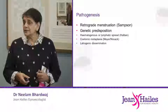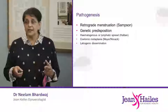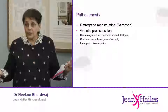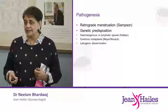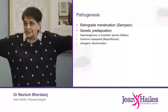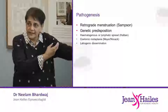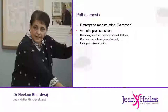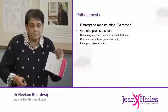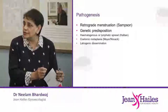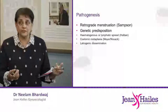So why does it happen? We don't know is the answer, and this is where research is being directed. The most popular theory is Sampson's retrograde menstruation theory — blood flows through the tubes, out of the fimbrial end, and drops into the peritoneal cavity. It then finds a root and starts growing in those spots, and that's where it becomes an endometriotic spot.